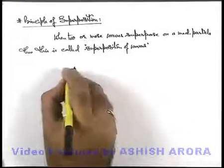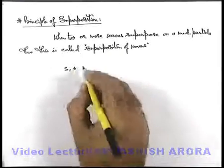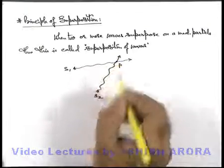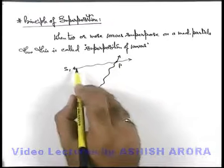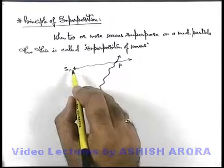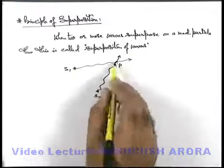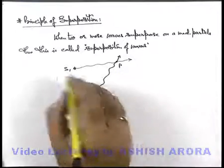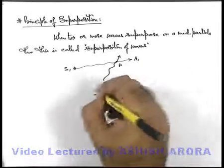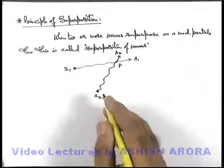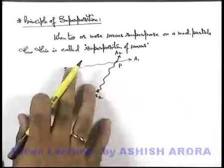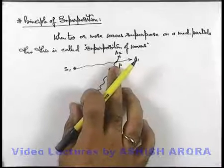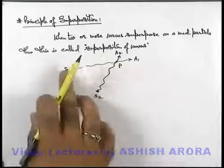If there are two sources S1 and S2 which are oscillating independently and throwing out waves in independent directions, and there is a medium particle P which will oscillate under the influence of the wave emitted from source S1 if it is alone oscillating. Say S1 is producing a simple harmonic wave of amplitude A1 and S2 is producing a wave of amplitude A2. Then if S2 is switched off, under the influence of S1, particle P will execute SHM of amplitude A1, and its motion equation will be given by the simple harmonic wave equation governed by source S1.